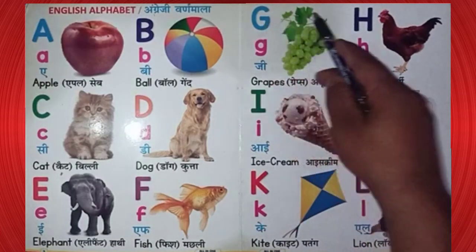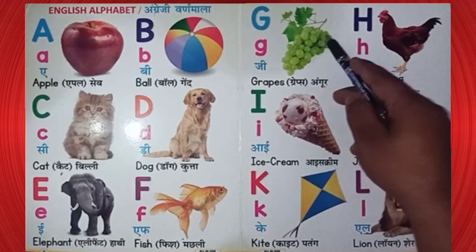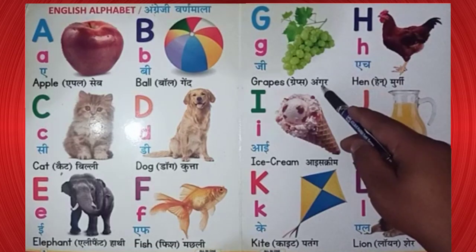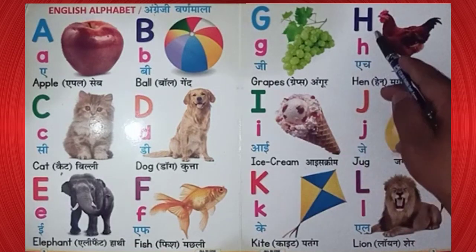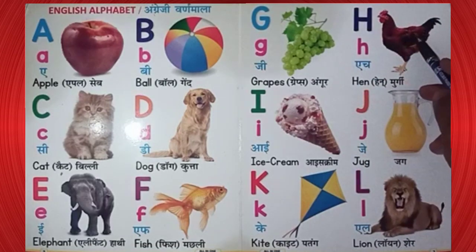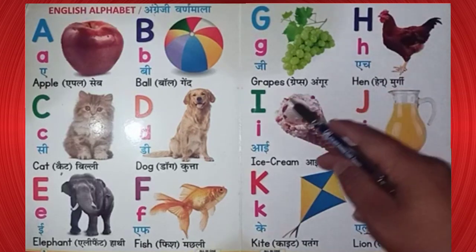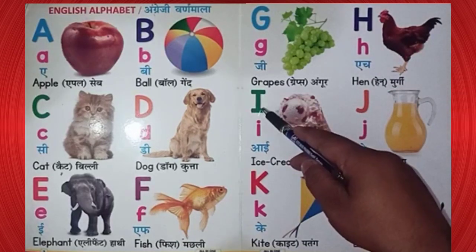G. G for grapes. Grapes means angoor. H. H for hen. Hen means murgi.